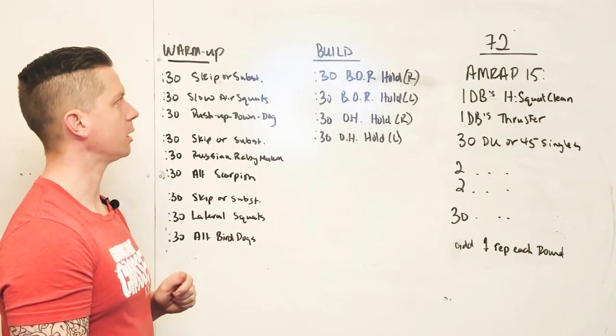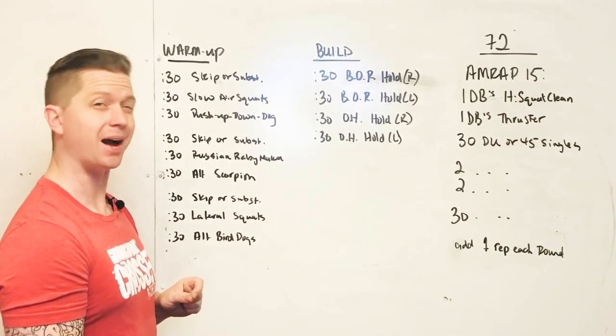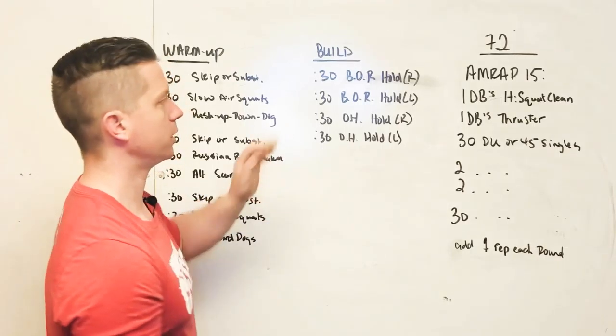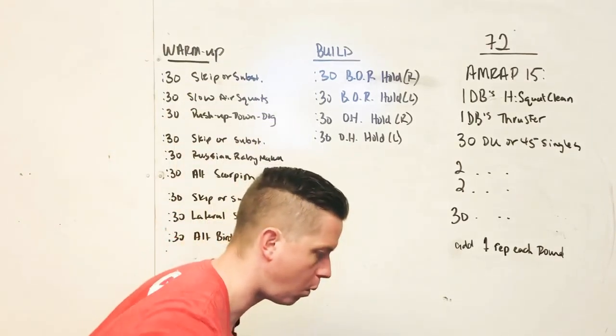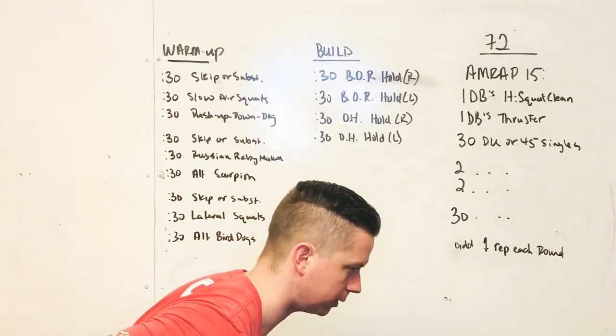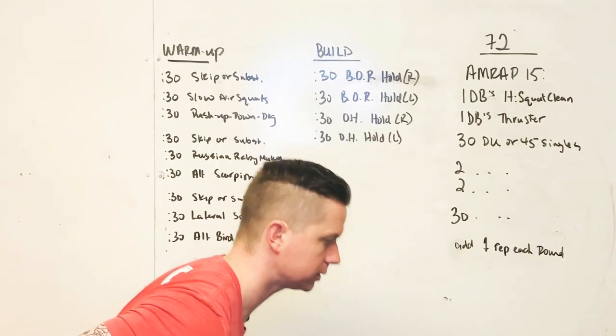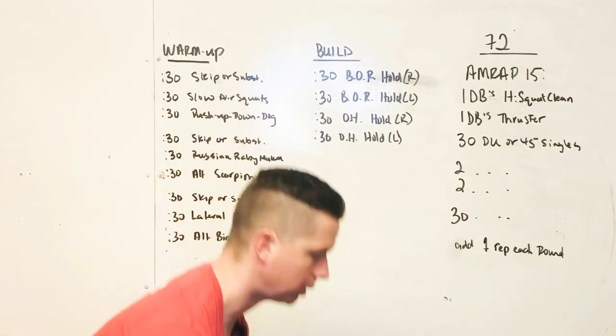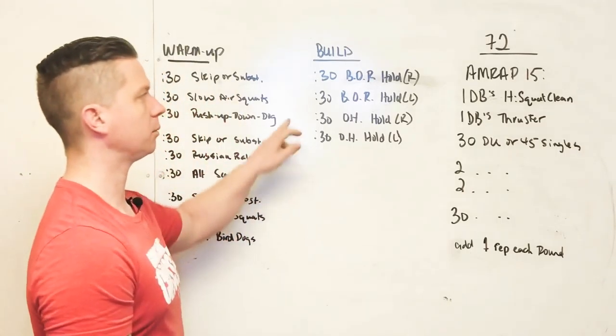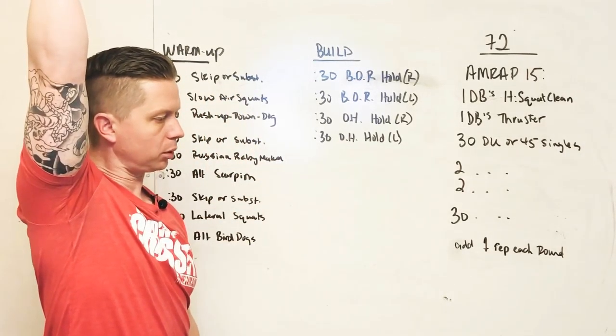AMRAP today. Build section—we're doing some isometrics today, so we're going to be doing a bent over row where we hold that row at the top position for 30 seconds. Then we posture break, we come up, we do 30 seconds on the other arm, and then we do the same thing with a press out or an overhead press for 30 seconds and then another 30 seconds.